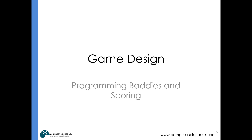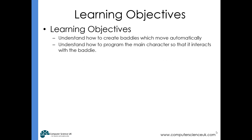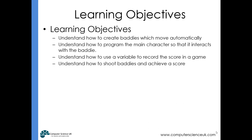This is the third lesson in the year eight game design unit and we're going to be looking at programming some baddies and programming our scoring system. We want to be able to create baddies which move automatically, program the main character so that if it's touched by a baddie it moves back to the start, use a variable to record the score, and understand how to shoot baddies and achieve a score.